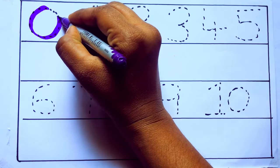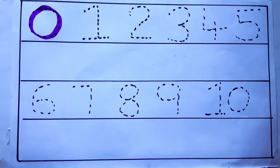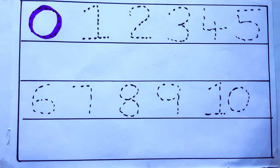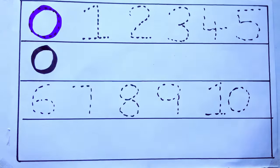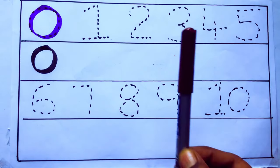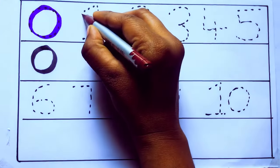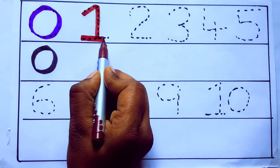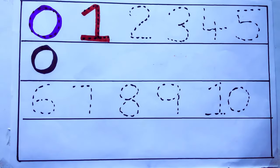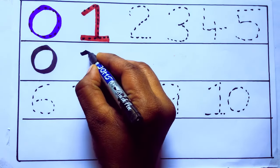Violet color, 0, Z-E-R-O, zero. Brown color, 1, O-N-E, one, number 1.